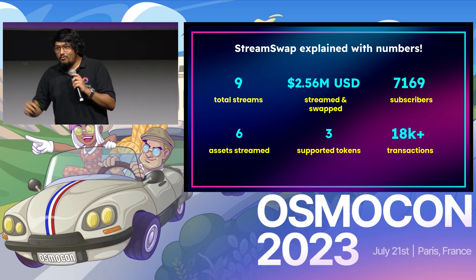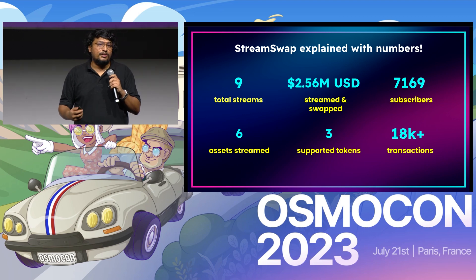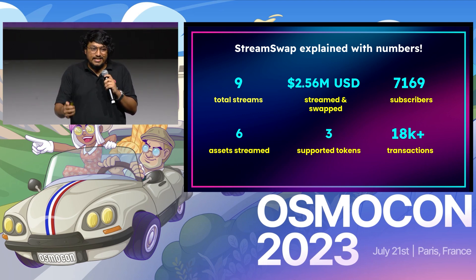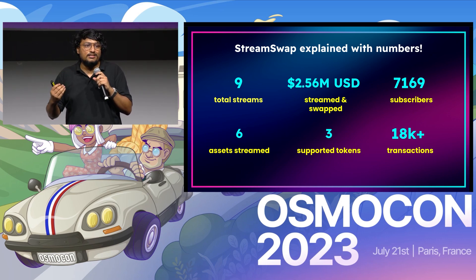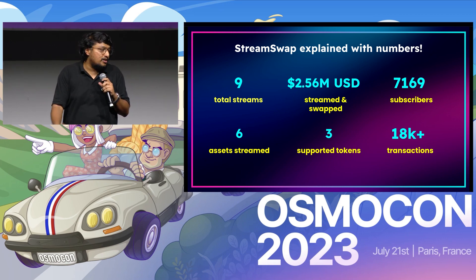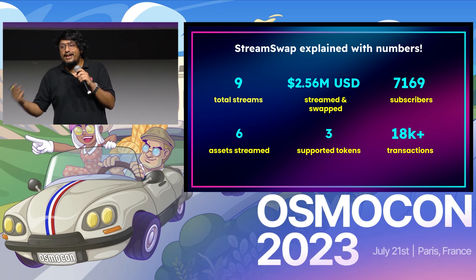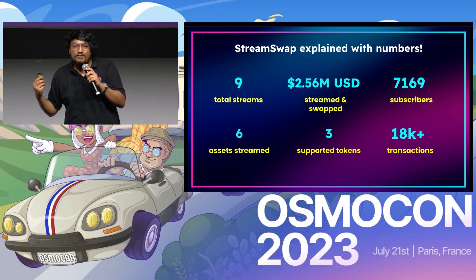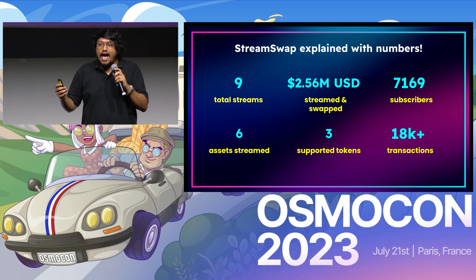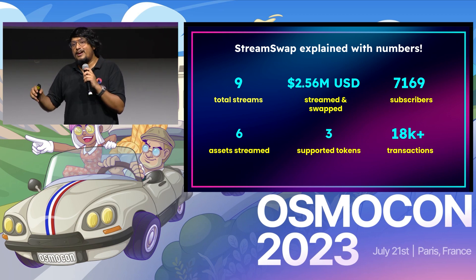Where are we at with StreamSwap since April? We've had nine streams in all, six assets launched as part of StreamSwap, and almost $2.56 million USD was raised across those launches. We support three subscription tokens: Osmo, Atom, and AXL USDC. We've had a total of 7,000 subscribers participating in various StreamSwap streams and 18K-plus transactions — proving that a community-driven model can exist within the Cosmos, and if you have the right community, they'll support you.